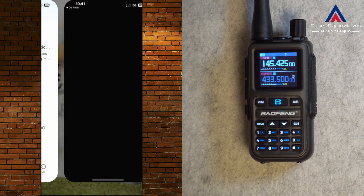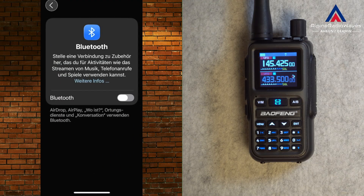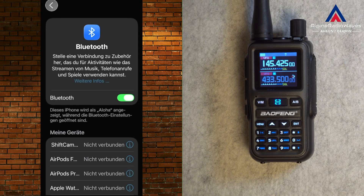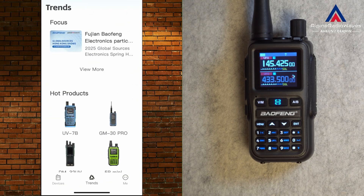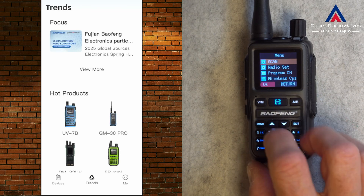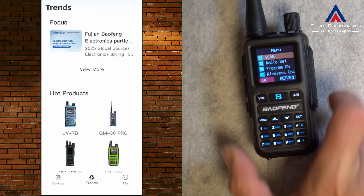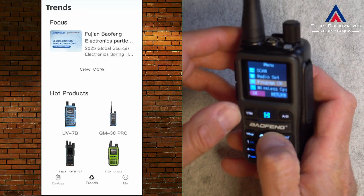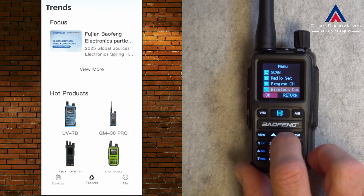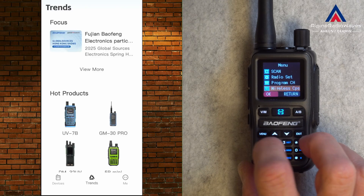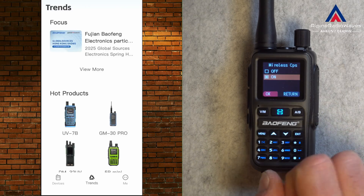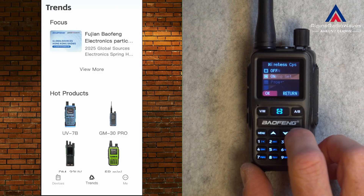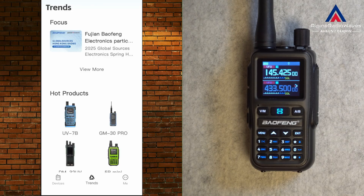Of course I have to turn on Bluetooth first. This is the start page of the app. On the radio you have to go to the menu and turn on Wireless CPS. Turn it on.